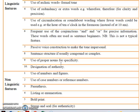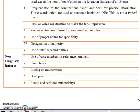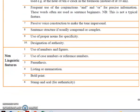Proper nouns are always used for specificity. Then you have designation of authority. So if there is a stamp that shows that it comes from a certain lawyer or a certain courthouse, that is where we know it's a designation of authority.